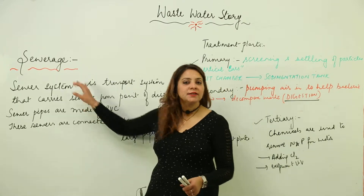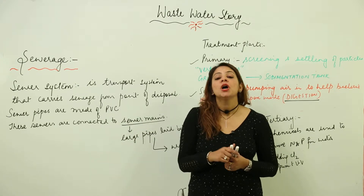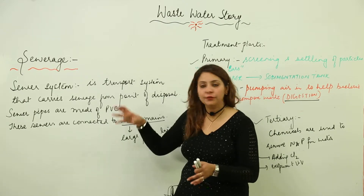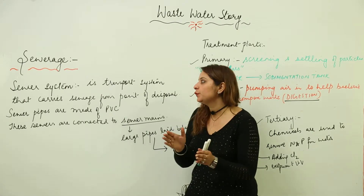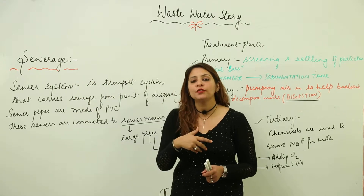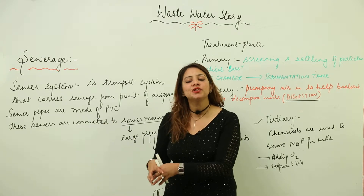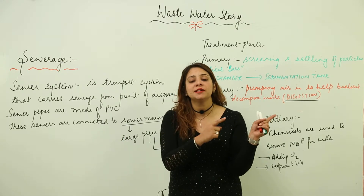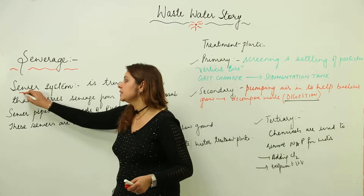Now we are going to start with the sewerage. The main cause of water pollution is the sewerage, so we have a proper system for the collection of sewerage. It is being disposed via a system in which sewerage, where it is produced, is carried to the point of disposal. It is produced at home, and we have certain pipes which take the sewerage from where it is produced to where it is treated — that is, to the water treatment plant. This is our sewer system.